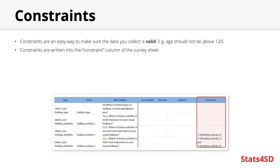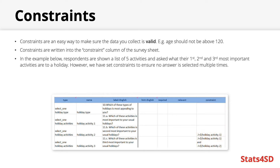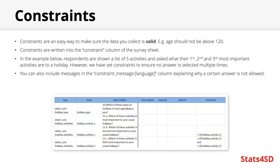The formula for a constraint is written into the constraint column of your survey sheet. In this example, a respondent is shown a list of five activities and sequentially asked what their first, second, and third most important activities are for enjoying their average holiday. In order to avoid duplication, they've made sure it's not possible for question 11.b to be the same as 11.a, and that 11.c cannot be the same as 11.a or 11.b. You can also add text to the constraint message column, which will appear when the constraint is broken, explaining to the user why a certain answer is not allowed.